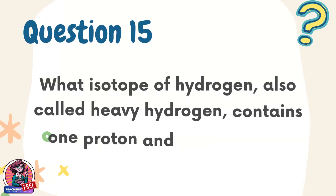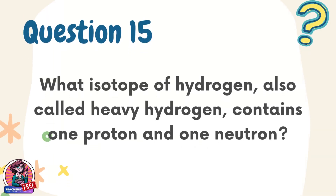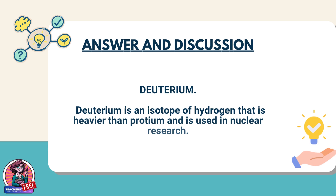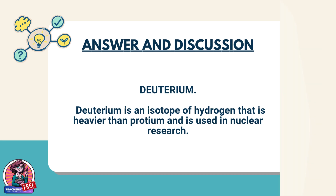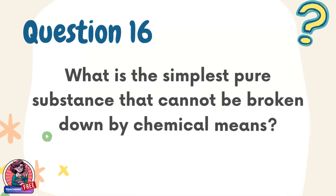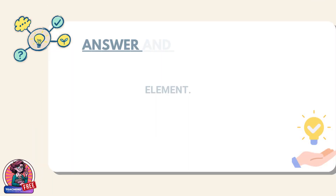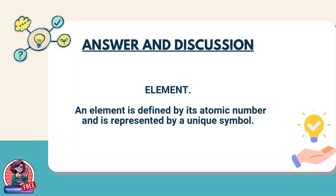Question 15. What isotope of hydrogen, also called heavy hydrogen, contains one proton and one neutron? Answer: Deuterium. Deuterium is an isotope of hydrogen that is heavier than protium and is used in nuclear research. Question 16. What is the simplest pure substance that cannot be broken down by chemical means? Answer: Element. An element is defined by its atomic number and is represented by a unique symbol.